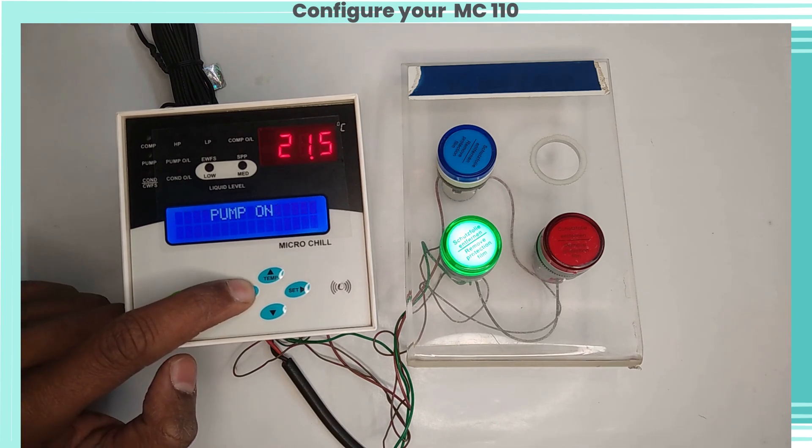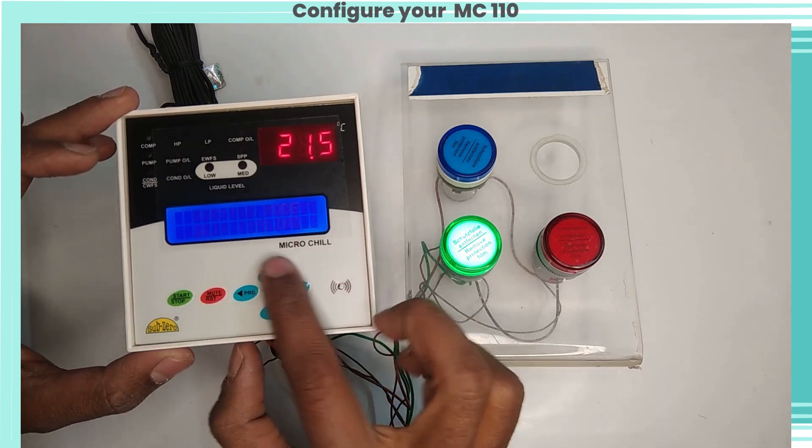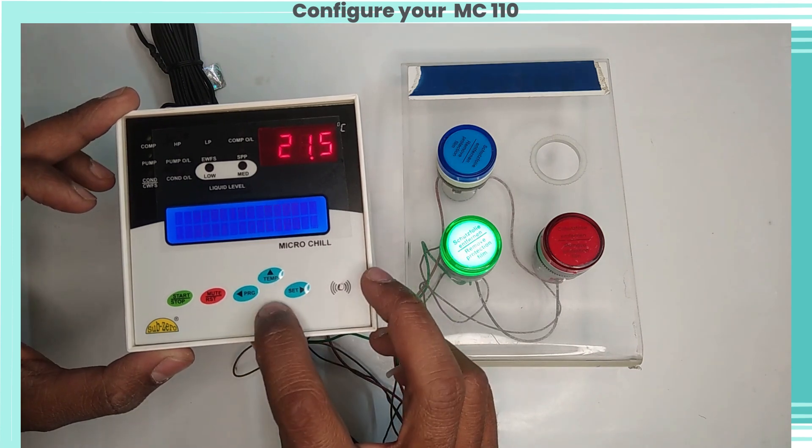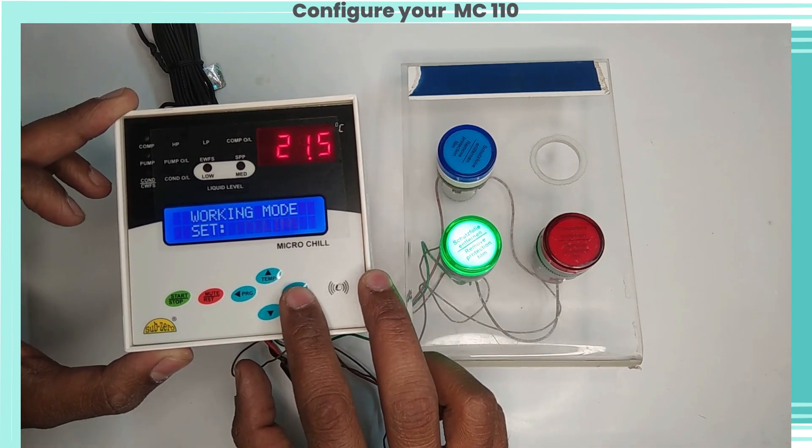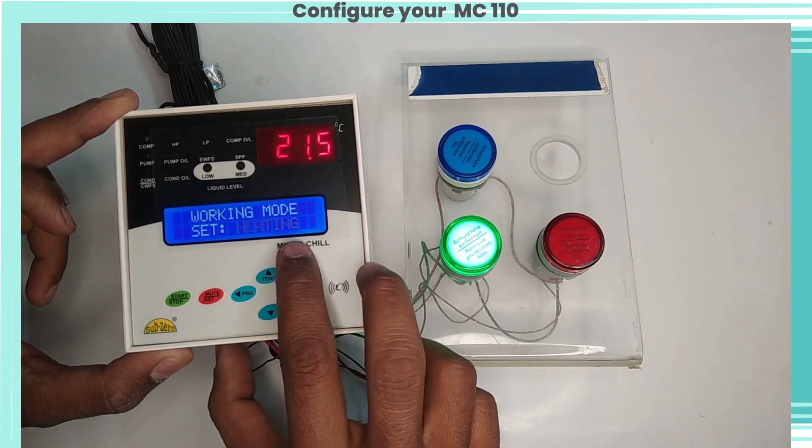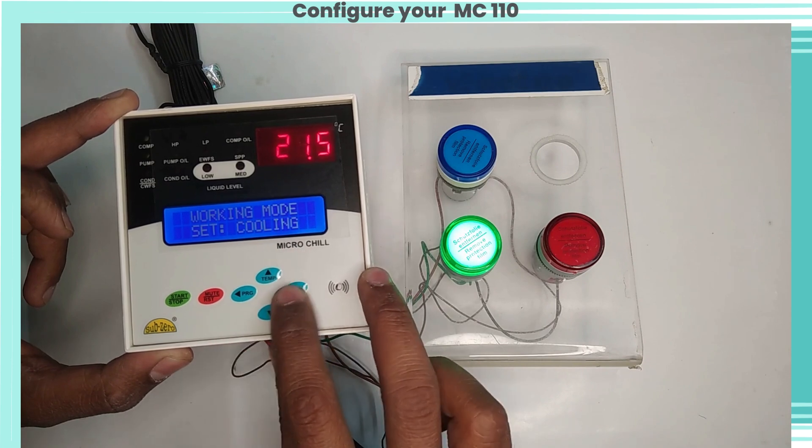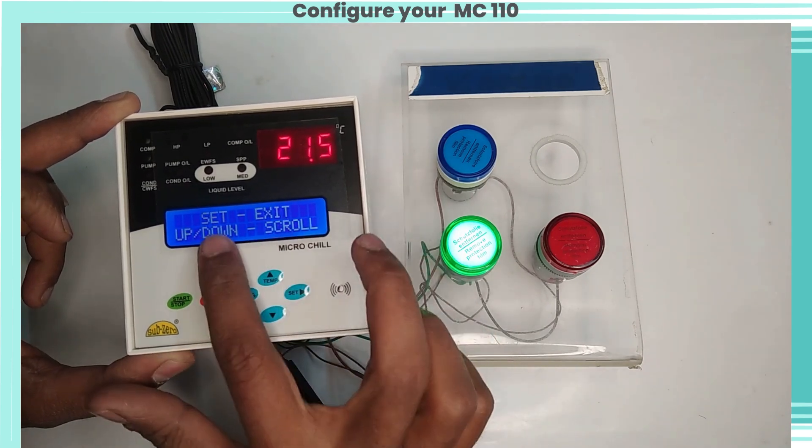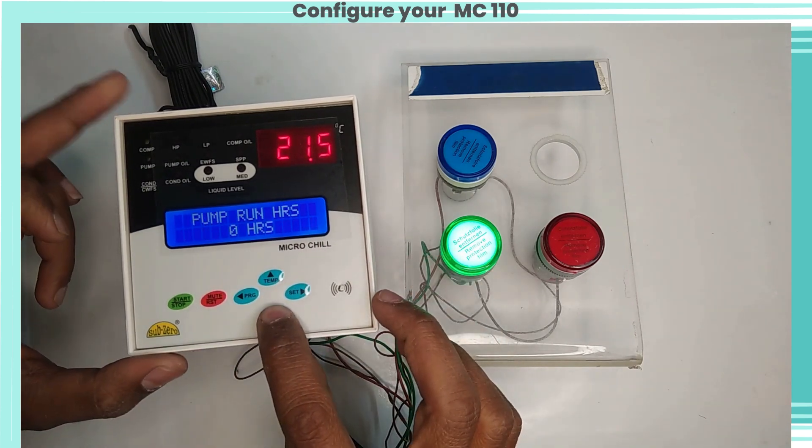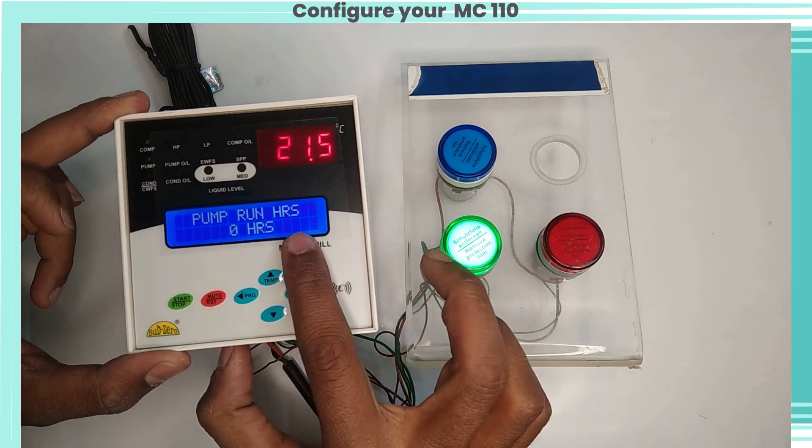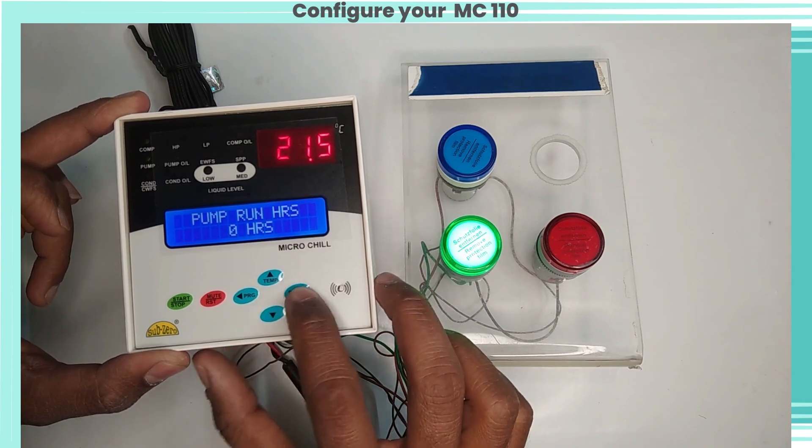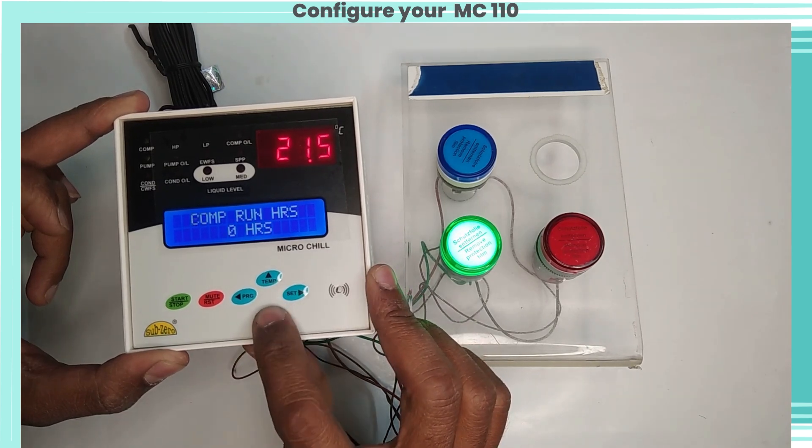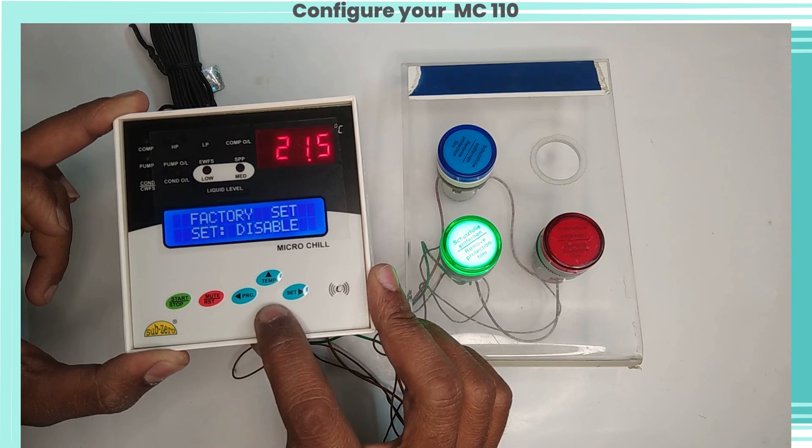Press temp key for two seconds to view AFT temperature. Here we can see AFT temperature. Now press PRG key to enter into program mode. Working mode - to set controller for heating or cooling. Use up-down keys to set desired value. Now we will see one example for cooling mode. If this is set, then the controller will function in cooling mode, i.e., compressor will be on if control temperature goes above set point.